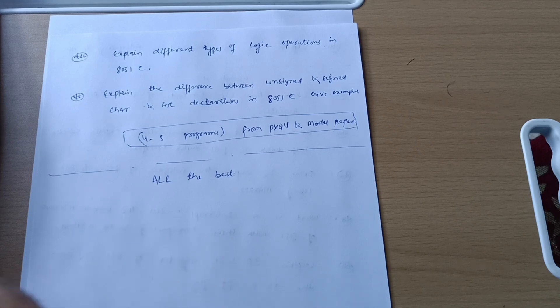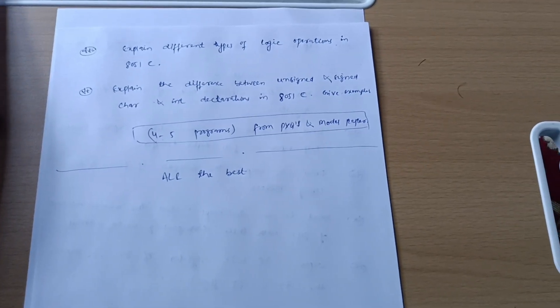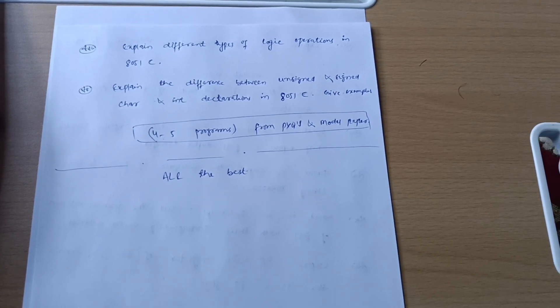Also refer four to five programs, practice programs as well. Sometimes they can give unexpected papers for these type of subjects which are programmatic. You cannot expect, but these are super important questions so these should be at your utmost priority. First of all try to cover these, then later on if you are getting some time you can go through another topics.